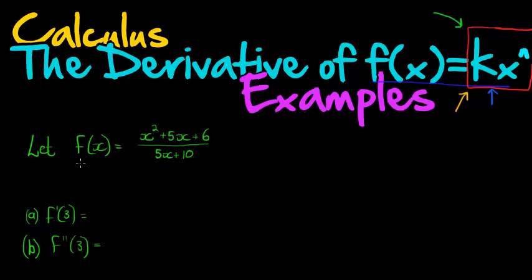Okay, so here we have yet another example. f of x is equal to x squared plus 5x plus 6, that is in the numerator, and the denominator we have 5x plus 10.